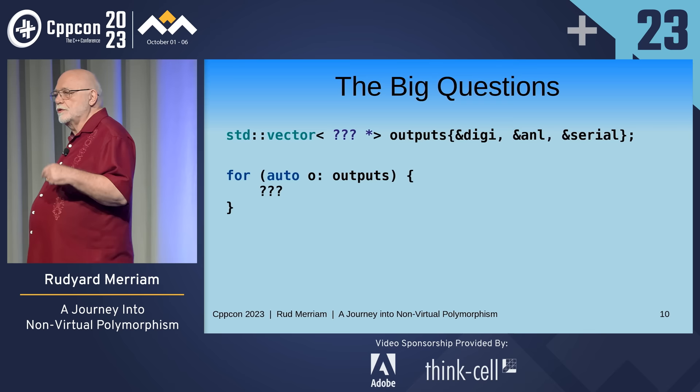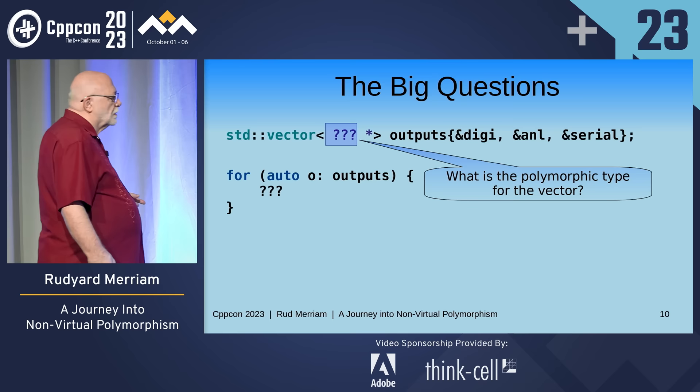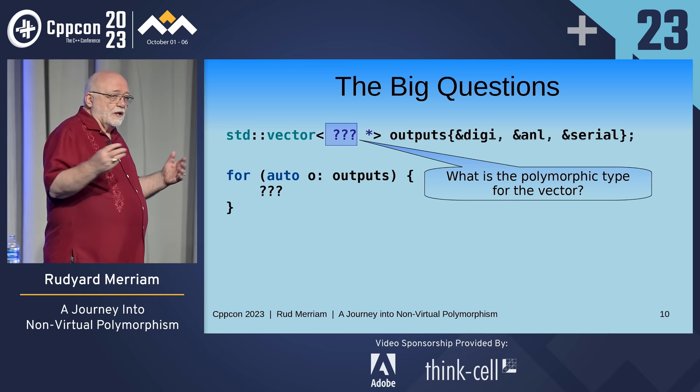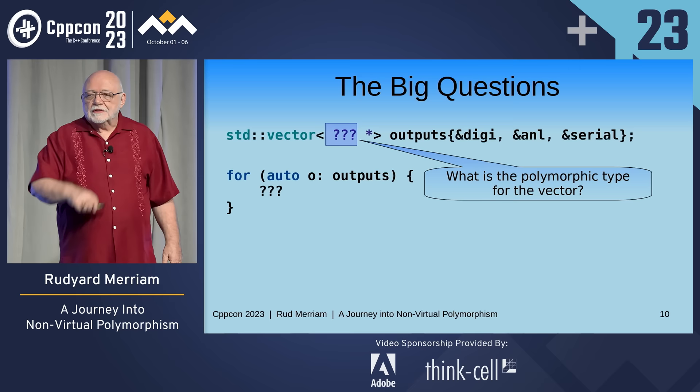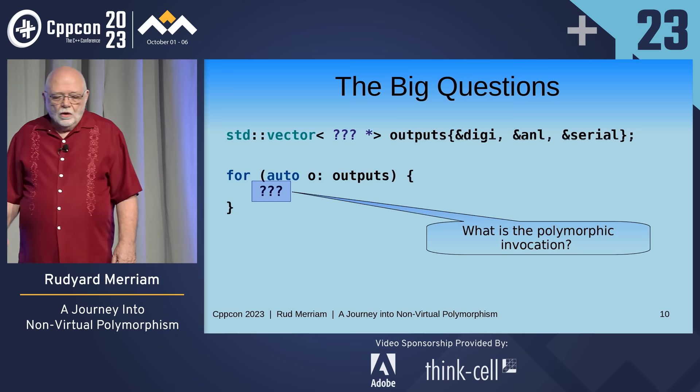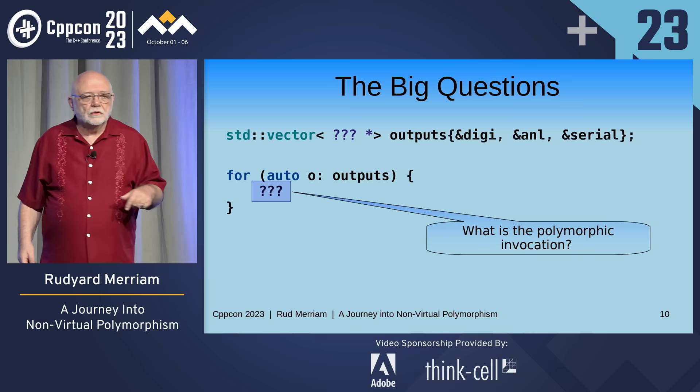We create some variables to work with: two digitals, an analog, and a serial. The big question — to put this in context — is when we've got a container like vector, we want to put these things in the vector so we can walk through them. Say when we're generating outputs, we want to do all the outputs at once — we don't want outputs going out at different times in an embedded system. So what's the polymorphic type we put in here? And what's the polymorphic invocation we do in our range-for loop or however we walk through the container?